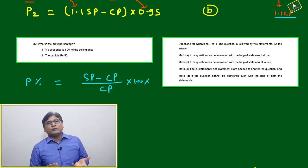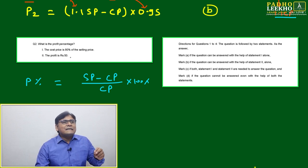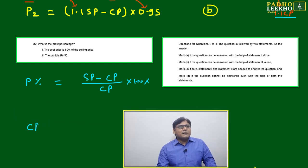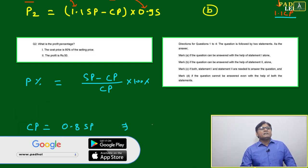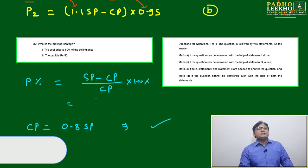Let's read statement one: the cost price is 80% of the selling price. Okay, cost price is 80% of selling price. Then we will be able to calculate. Both are given - selling price and cost price - we have the idea.